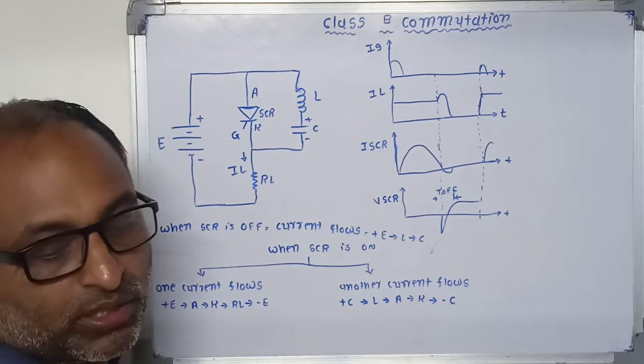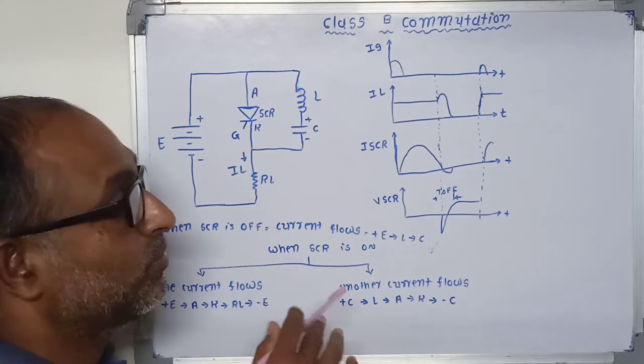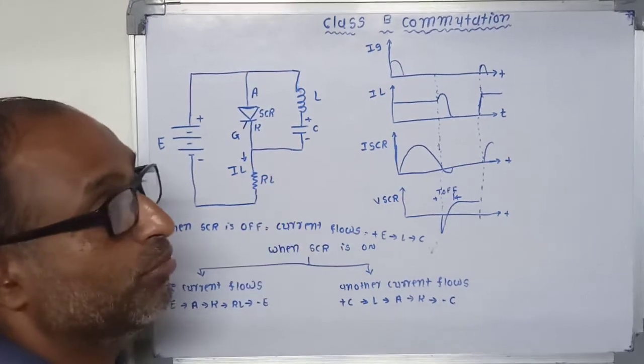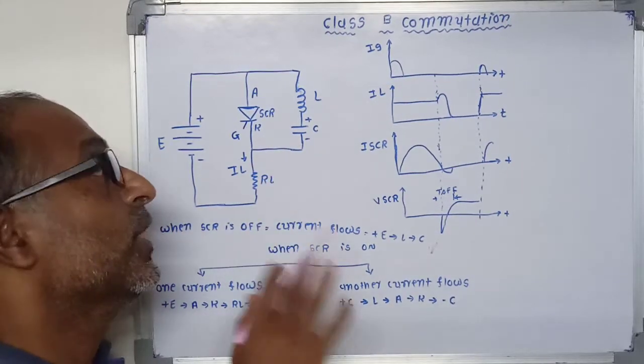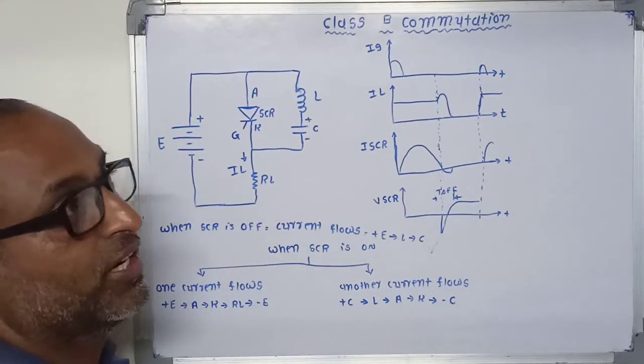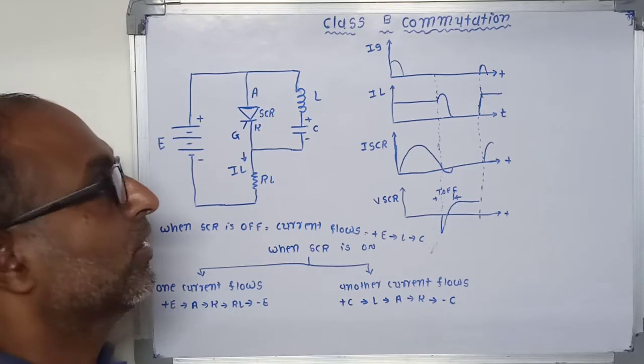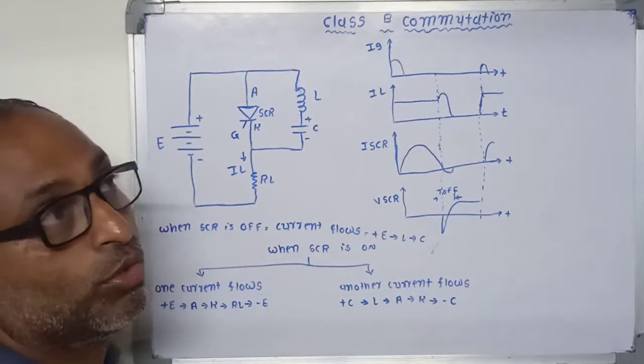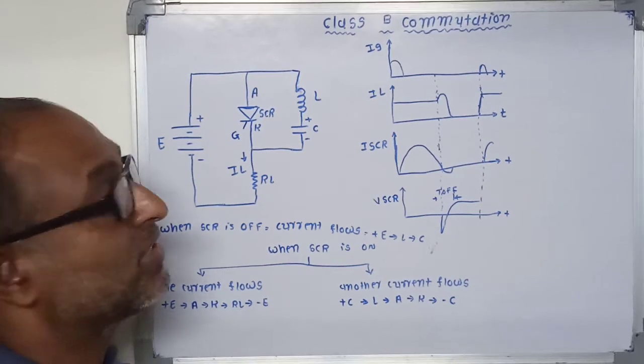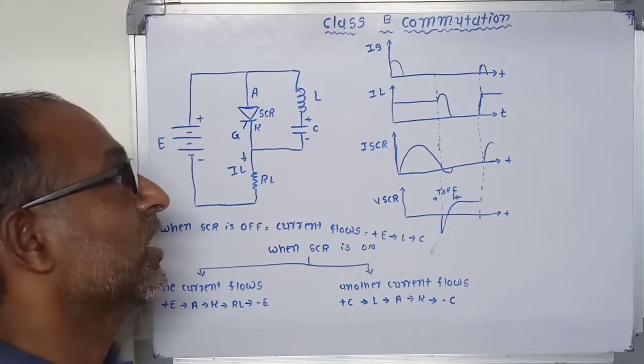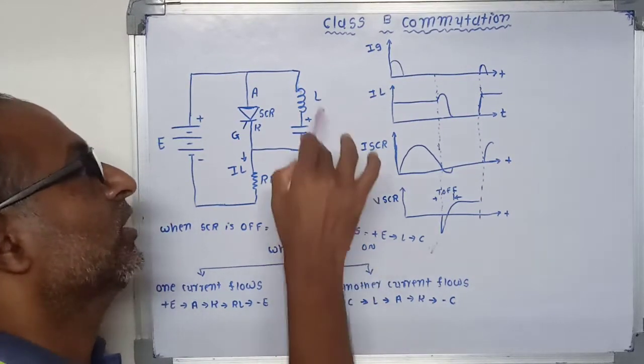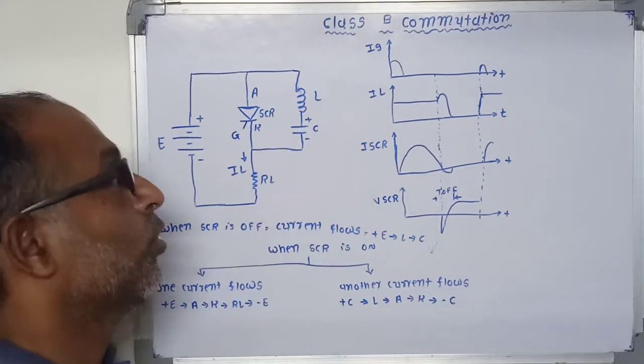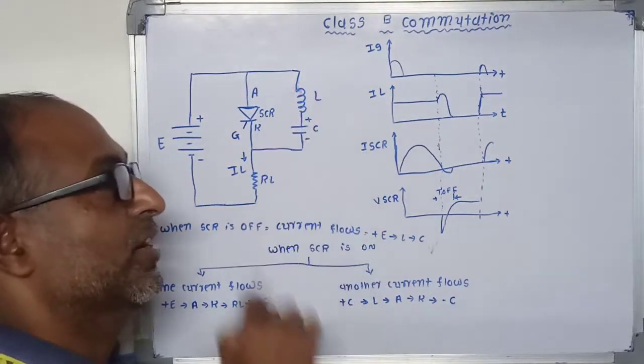This type of commutation or Class B commutation is mostly used in chopper circuits. Another example of Class B commutation is the Morgan circuit, which we will see later. In Morgan circuits, we use a saturable reactor core instead of this inductor.